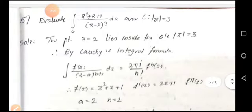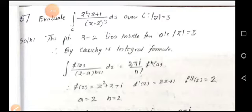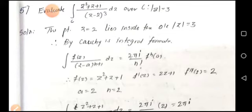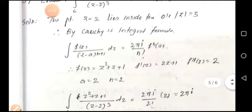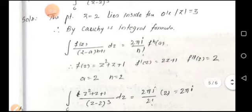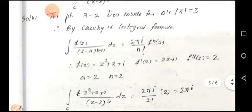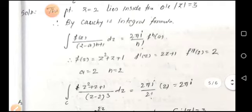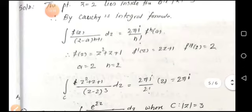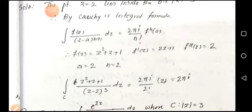Fifth example: evaluate the integral over c of (z²+z+1)/(z-2)³ dz over the circle |z|=3, which has center at origin and radius 3. The point z=2 lies inside the circle. By the generalized Cauchy integral formula, ∫f(z)/(z-a)^(n+1)dz = 2πi/n! · f^(n)(a), with f(z)=z²+z+1, f'(z)=2z+1, f''(z)=2, a=2, n=2. Therefore the integral equals 2πi/2! · 2 = 2πi.